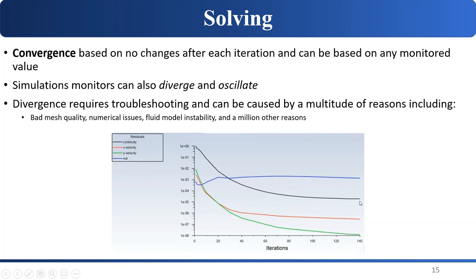This is what basic convergence might look like on the monitors. In reality, you might see simulations diverge or oscillate. Oscillating might not be a bad sign — if your flow is highly unsteady or separated, it will oscillate because the nature of separated flow is inherently transient. If you're trying to find a steady-state solution on a transient flow, you'll see monitors oscillate up and down. As long as it oscillates around a constant value, that's probably the best you're going to get.